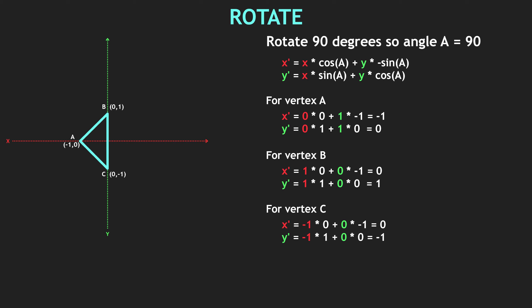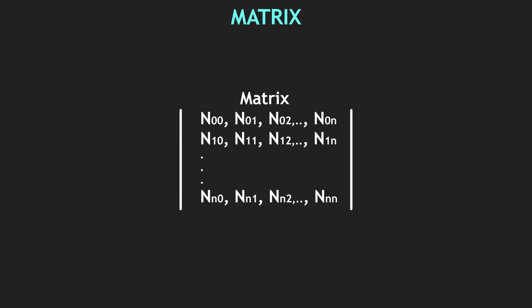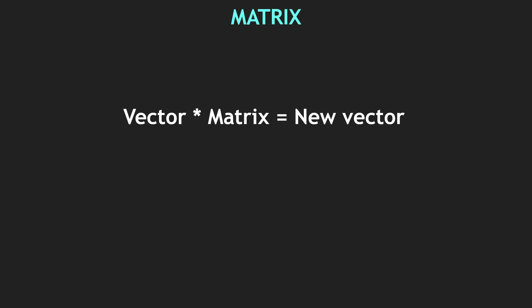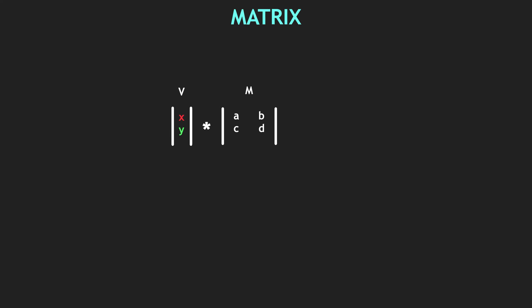However, in computer graphics, those transformations are applied by multiplying our matrix. What is a matrix? A matrix is basically a multidimensional array that holds numbers in a collection of rows and columns. In computer graphics, we take our vector and multiply it with our matrix to get a new vector. We multiply our vector (x, y) with our matrix (a, b, c, d): new x = x×a + y×b, and new y = x×c + y×d.